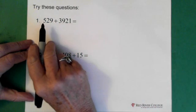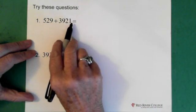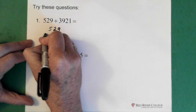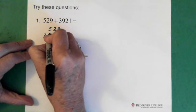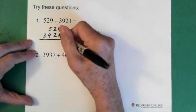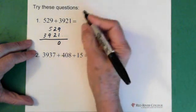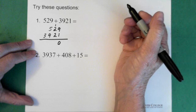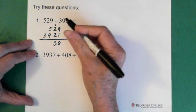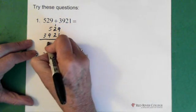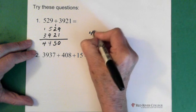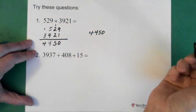Alright. 529 added to 3921. So here we are. 529. And now the 3 goes in the thousands position. So 3, 9, 2, 1. 9 and 1 is 10. So the 0 goes down here, and the 1 goes above the 2. 2 plus 2 plus 1 is 5. 9 plus 5 is 14. The 4 goes down here, the 1 goes up here, and we end up with 4, 4, 5, 0. Okay, that would be the answer.